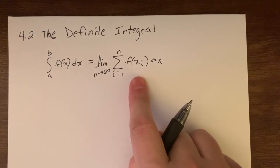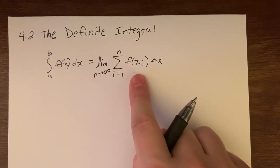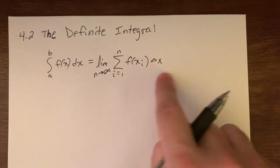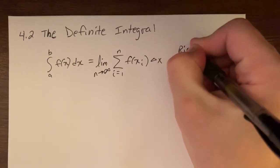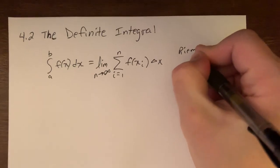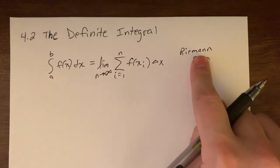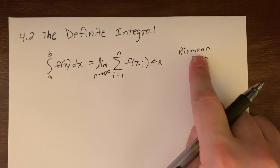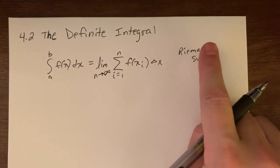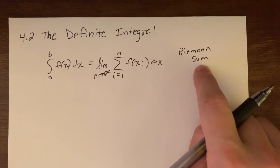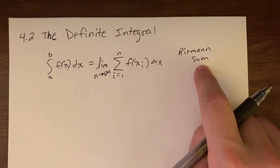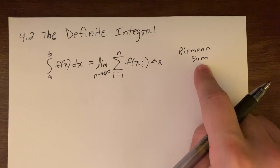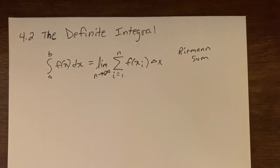This idea is also called a Riemann sum. Riemann is a very famous mathematician who did a lot of work in calculus-based areas, and this idea is named after him. So if you ever hear 'Riemann sum,' it just refers to that idea of rectangles representing area under the curve.